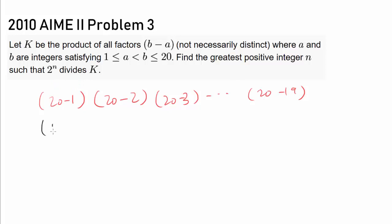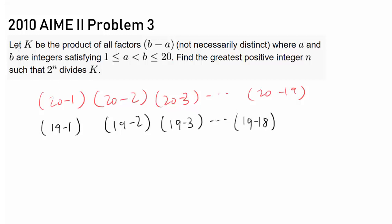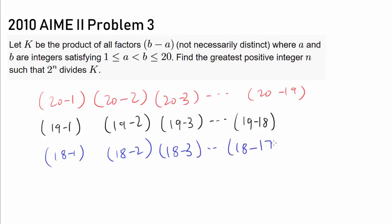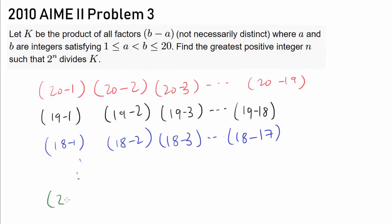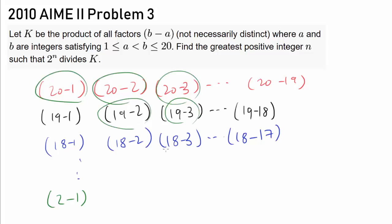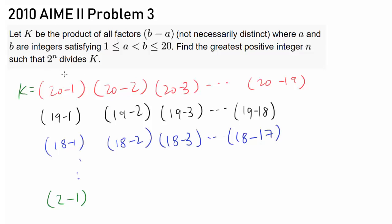Then we have 19 minus 1, 19 minus 2, 19 minus 3, all the way to 19 minus 18. Then 18 minus 1, 18 minus 2, 18 minus 3, all the way to 18 minus 17. We go down all the way to 2 minus 1. When we multiply out all 190 of these factors we get k, and we want to find the number of 2s in the prime factorization of this entire thing.